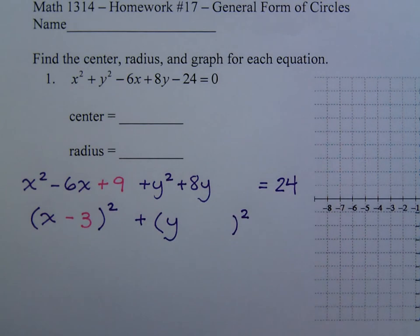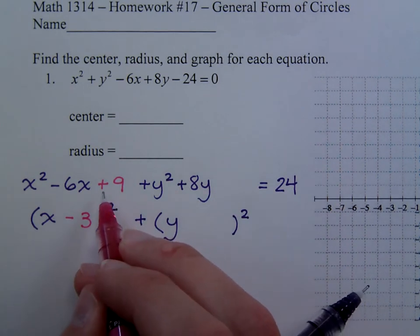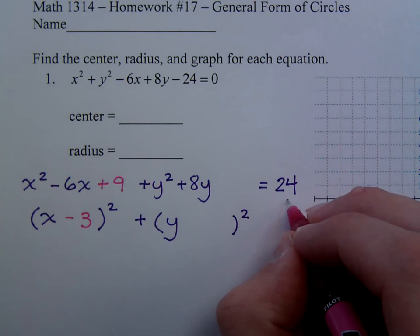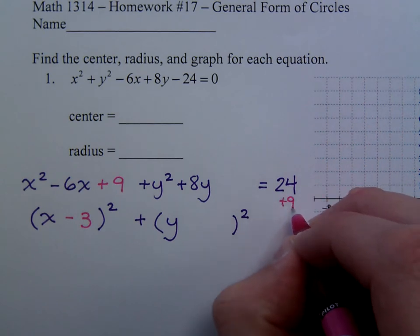Now when we were completing the square before, we know we can't just add 9 here. We have to add it to the other side of the equation. So we have to add 9 to this guy.